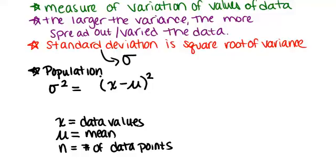Then you're going to take the sum of all of them. So that's why it helps if you have a table. And then divide by n, which was the number of data points that you had. And that's how you find variance.